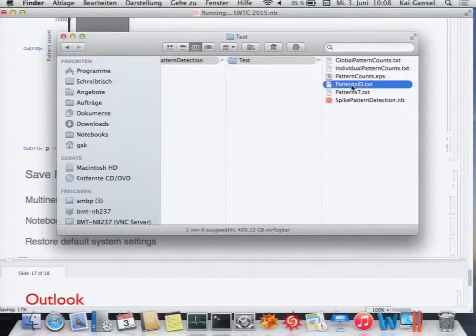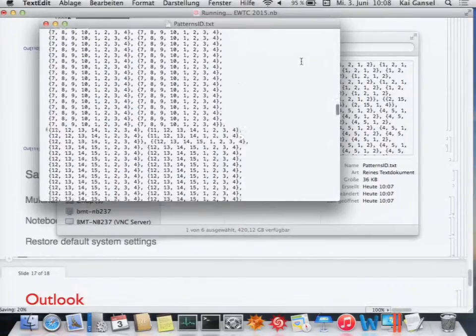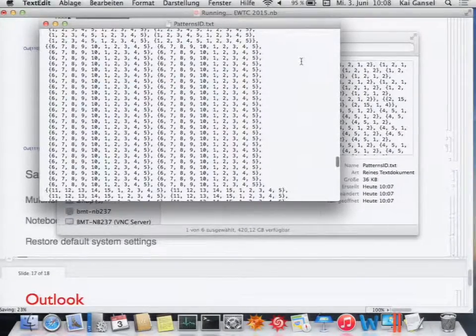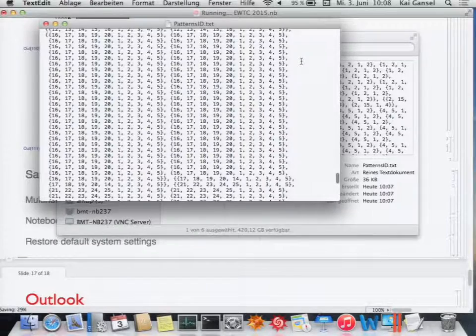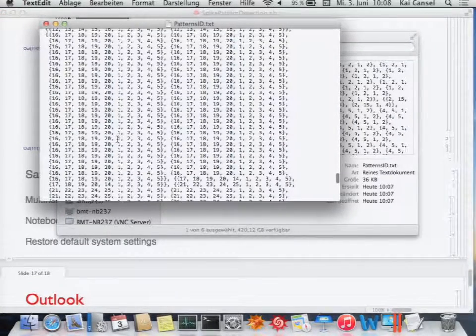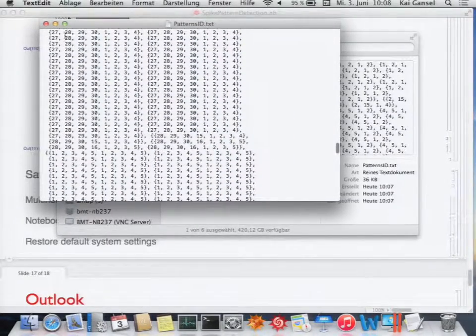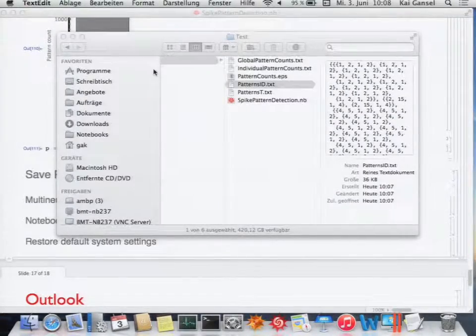And you could have a look at it. Let's assume the text files. And you see that the patterns that should be in there. Like, for example, this unit 16, 17, 18, 19, 20 in time when it's 1, 2, 3, 4, 5 is there and has been detected. So this is how it works.